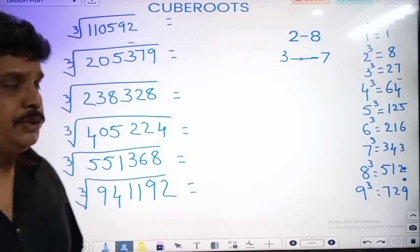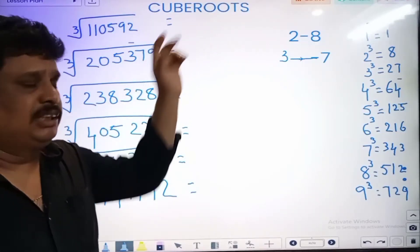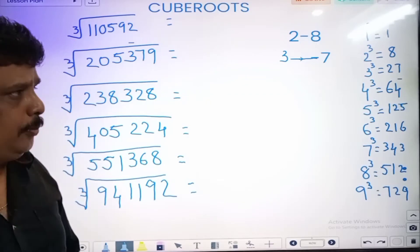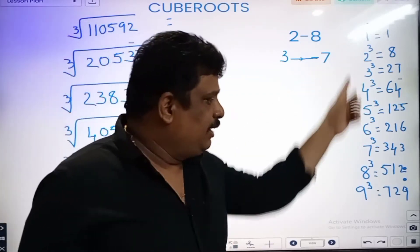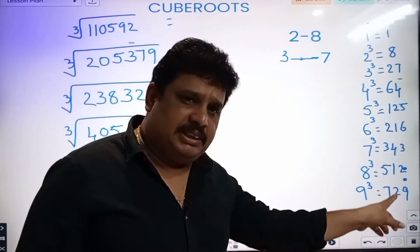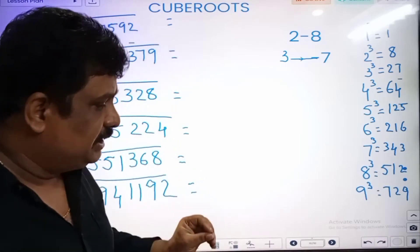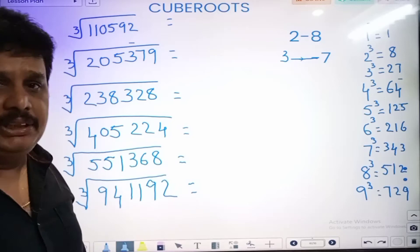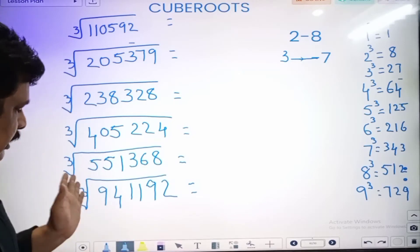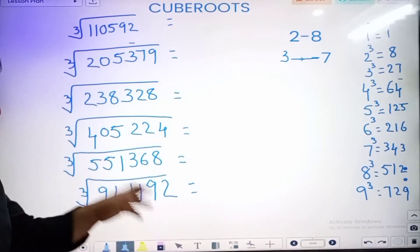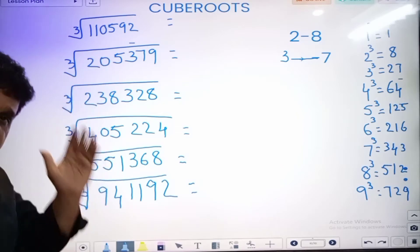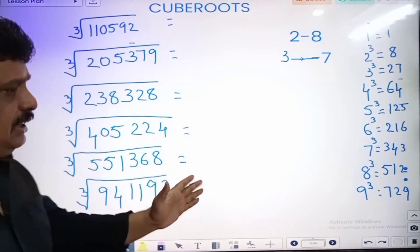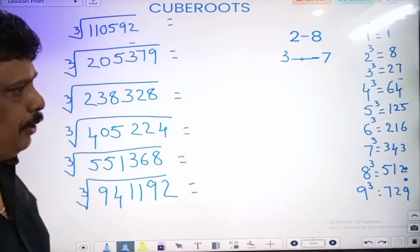So dear students, today we are discussing cube roots. We have to do cube roots by an easy technique to do them fast. We have to do it in 5 seconds for 6 digits, 5 digits, 7, 8 digits. This is a very important technique for cube roots.